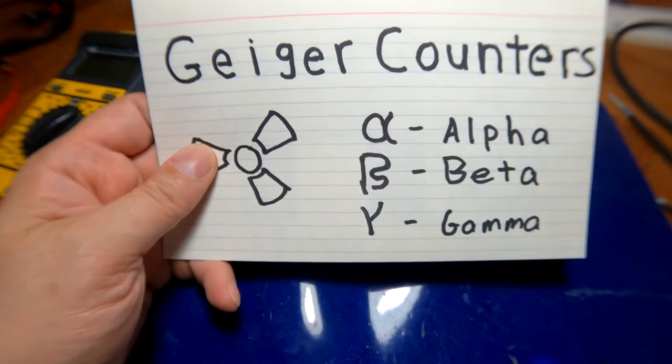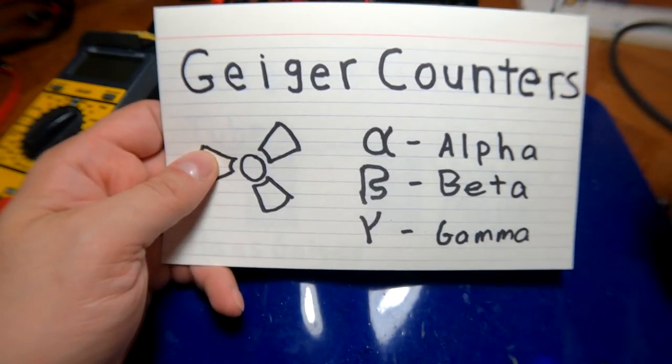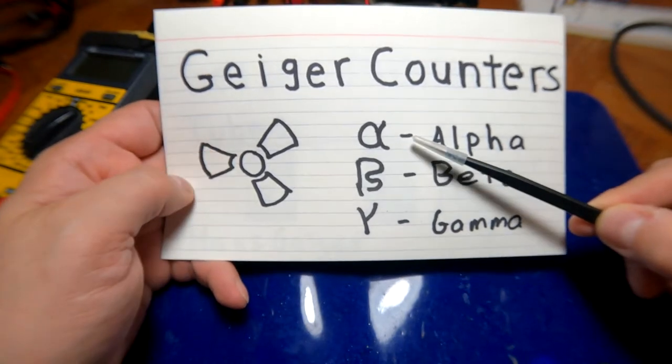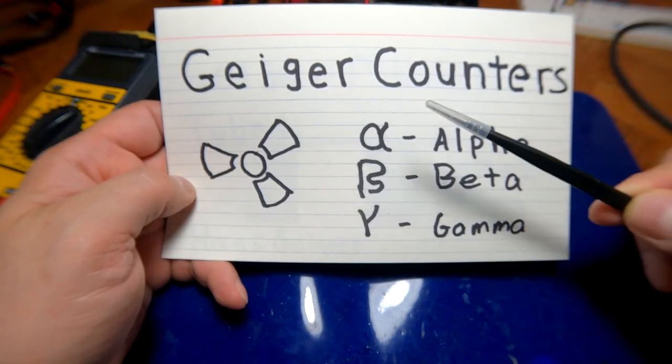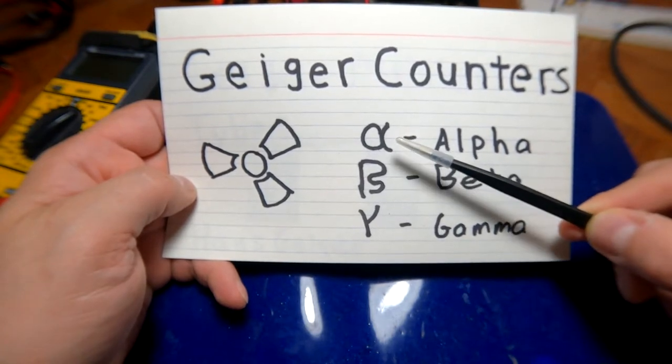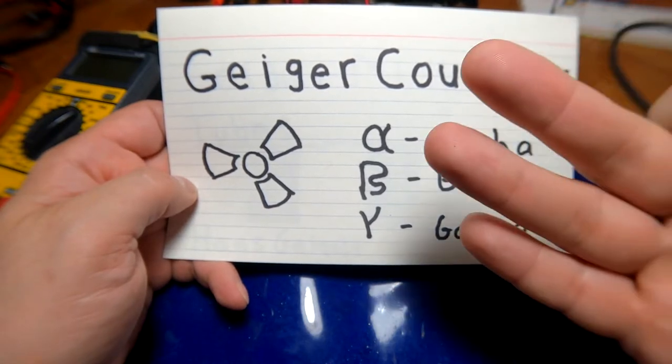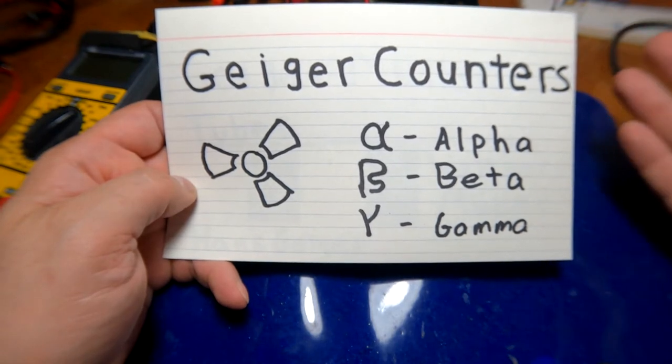So the first thing that we need to understand is that Geiger counters detect radiation, which I think most of us knew. The types of radiation that Geiger counters can detect are alpha radiation, beta radiation, and gamma radiation. Alpha radiation is very short range and cannot penetrate even your skin or even a piece of paper. Alpha radiation will be stopped by almost anything.